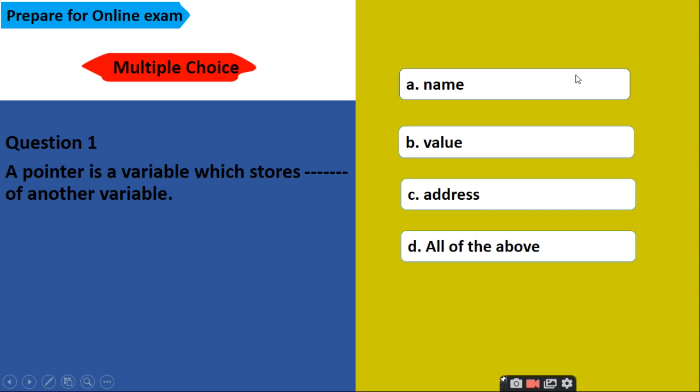Let's start with the first question. A pointer is a variable which stores dash of another variable. Options are name, value, address, all of the above. And correct answer is address. Because the definition of pointer, pointer is a variable which stores the address of another variable.